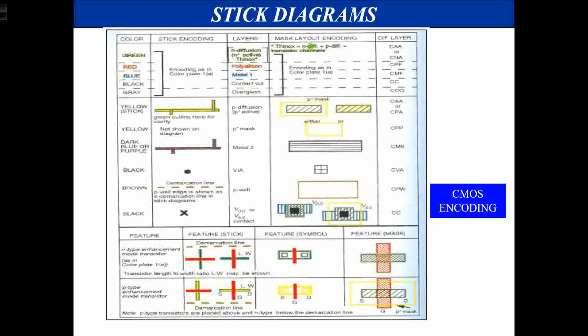For CMOS encoding — as CMOS is complementary metal oxide semiconductor — a different notation is used. P diffusion uses yellow, metal 2 uses dark blue or purple, and a wire connection uses a black circle. A demarcation line is drawn to separate the pull-up and pull-down networks. N-type enhancement mode transistor is similar to NMOS encoding, while P-type uses polysilicon crossing P diffusion.